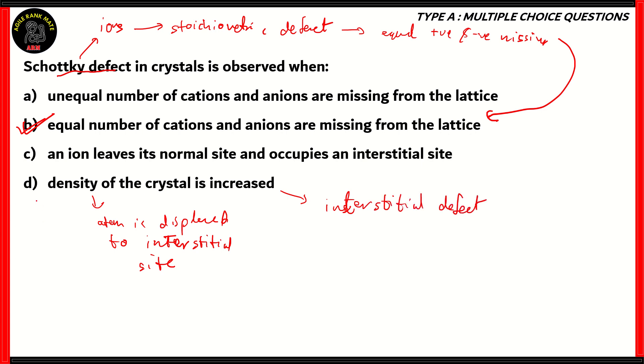So option D is incorrect. What about option C? An ion leaves its normal site and occupies an interstitial site. Here we're dealing with an ion. Interstitial defect acts for both ionic and non-ionic solids. Therefore, option C is particularly referring to the Frenkel defect, which is the name of the interstitial defect where an ion leaves its normal site. So option C is also incorrect.